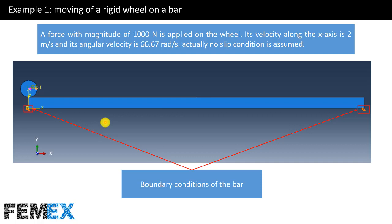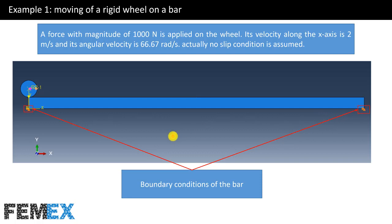In Example 1, I define the moving load along the bar. I have created a rigid wheel and applied a load on its reference point — a force with magnitude of 1000 Newtons. Its velocity along the x-axis is 2 meters per second and its angular velocity is 66.67 radians per second. A no-slip condition is assumed, and the bar has defined boundary conditions.